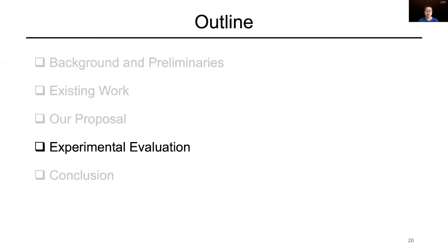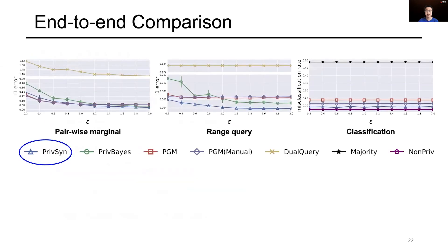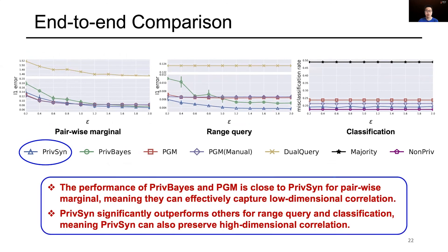Finally, I will present our experimental results. We use three downstream data analysis tasks and their commonly used metrics to measure the performance. They are pairwise marginals, range query, and classification model. We use two state-of-the-art graphical model-based methods and one GAN-based method as our baseline. This figure shows the end-to-end comparison of different dataset generation methods on the Colorado dataset. We observe that the performance of PrivBayes and PGM is close to PrivSim for pairwise marginal, meaning they can effectively capture low-dimensional correlation. On the other hand, PrivSim significantly outperforms others for range query and classification, meaning PrivSim can also preserve high-dimensional correlation.